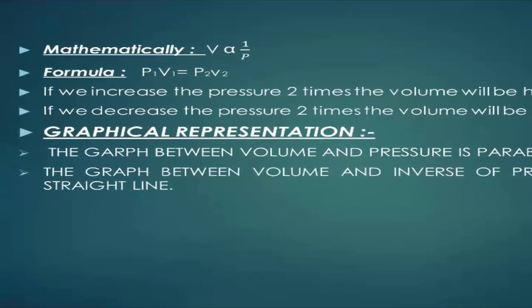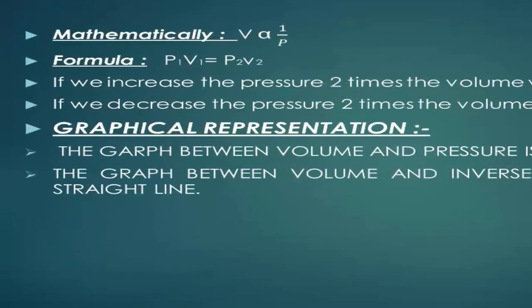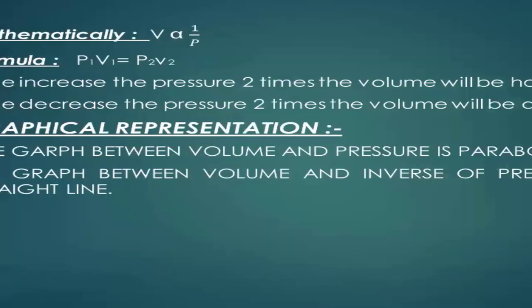Mathematical representation: volume is inversely proportional to pressure. The formula is P1V1 = P2V2, where P1 is the pressure of gas 1, V1 is the volume of gas 1, P2 is the pressure of gas 2, and V2 is the volume of gas 2. If we increase pressure 2 times, the volume will be half.